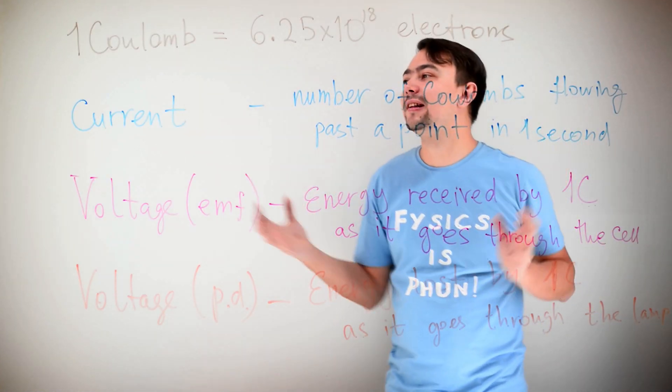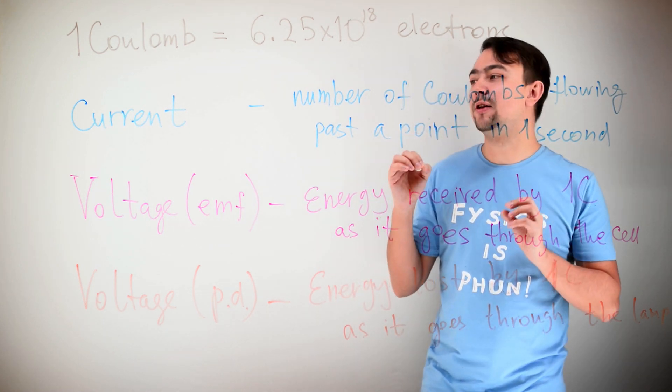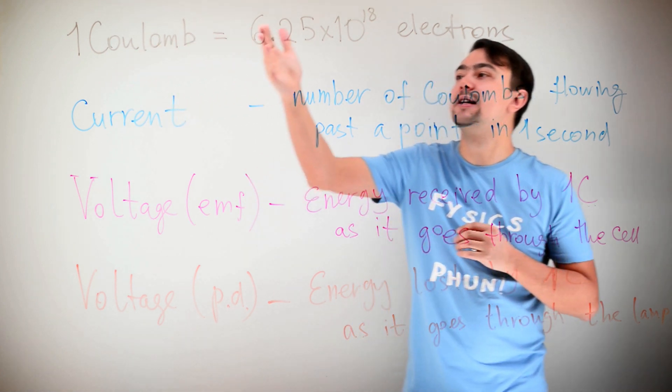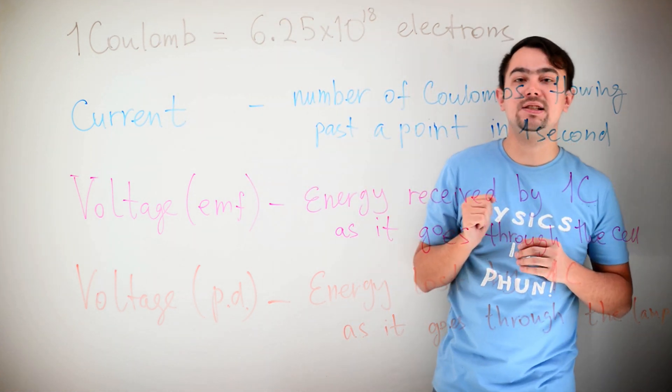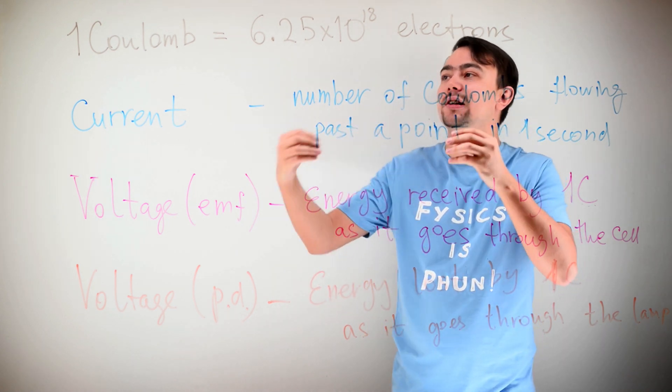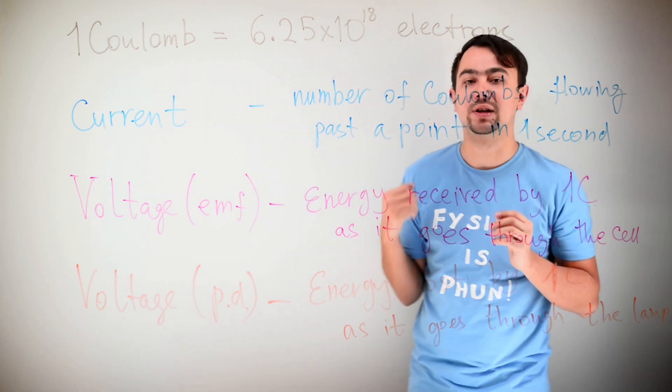And now, finalizing, I'd like to write out all the definitions. So, one Coulomb is 6.25 times 10 to the 18th electrons. Well, not exactly. One Coulomb is not electrons. It's the charge equivalent to the charge of this amount of electrons.